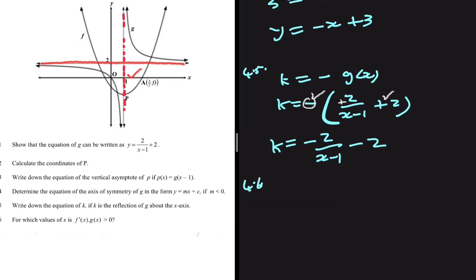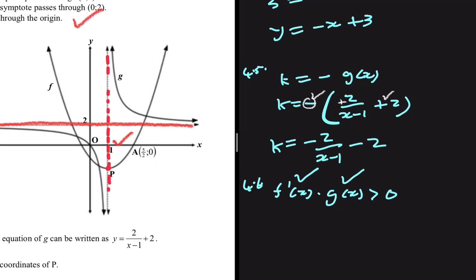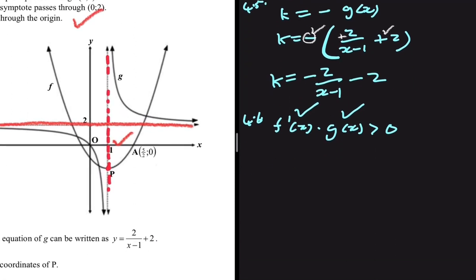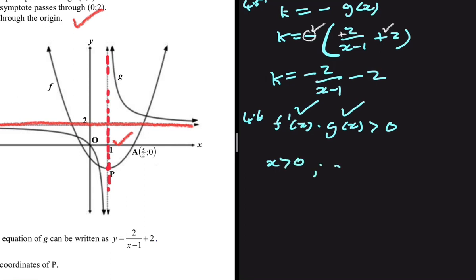Question 4.6: for which values of x is f prime of x multiplied by g of x greater than 0? We're looking for values where the gradient of f of x multiplied by g of x is greater than 0. Analyzing the graph, this is true when x is greater than 1, with the restriction that x cannot equal 1.